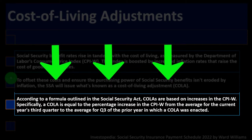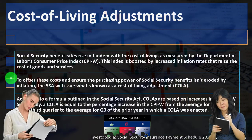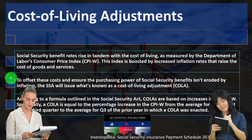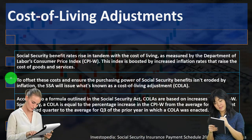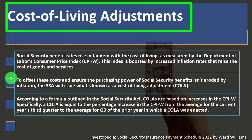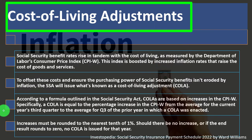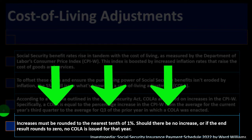COLAs are based on increases in the CPI-W. Specifically, a COLA equals the percentage increase in the CPI-W from the average for the current year's third quarter to the average for Q3 of the prior year in which a COLA was last issued. Increases must be rounded to the nearest tenth of one percent. Should there be no increase, or if the result rounds to zero, no COLA is issued for that year.